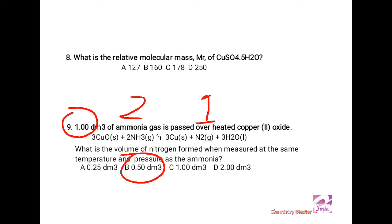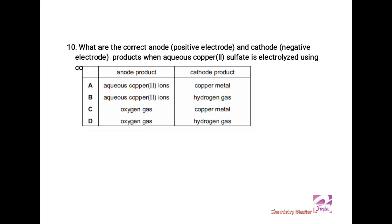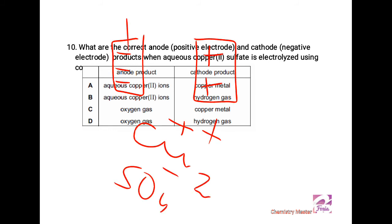The last MCQ is from electrolysis. What are the correct anode (positive electrode) and cathode (negative electrode) products when aqueous copper sulfate is electrolyzed using copper electrodes? You have to imagine an electrolytic cell in which copper cathode and copper anode are connected to the battery. The hint is in the statement that both electrodes are made up of copper, and the electrolyte is copper sulfate, means copper and sulfate ions. As the current flows, there are two reactions which are to take place: one oxidation and one reduction.